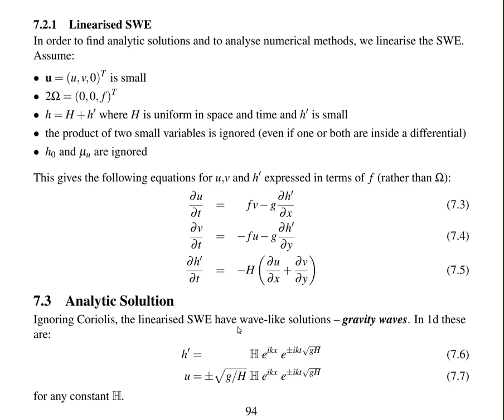Here are these solutions. So we've got e to the ikx, waves in the x direction, e to the plus or minus ikt times the square root of gh, so waves in time as well, and there's a scale between the velocity and the height which is the square root of gh. And these solutions hold for any wave number k and for any constant h.